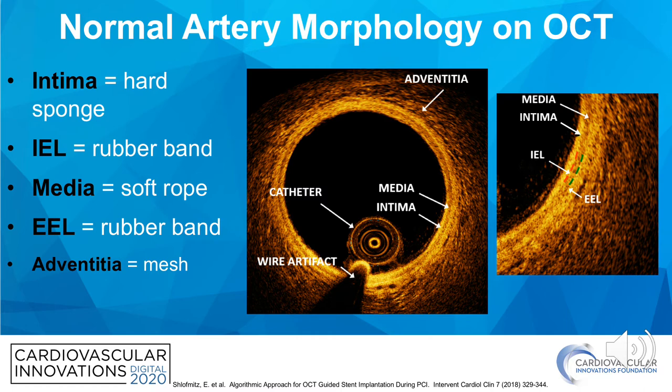Now that you've acquired an image, next up is interpreting the image. Here we have an OCT cross-section of a normal coronary artery. We have the catheter which runs along the guide wire, and there's always guide wire artifact shadowing alongside the catheter. Due to the high quality resolution of an OCT catheter, we're able to see the three distinct layers of a coronary artery wall: the intima as labeled, the media with its inner elastic lamina and the outer external elastic lamina, and lastly the adventitia.